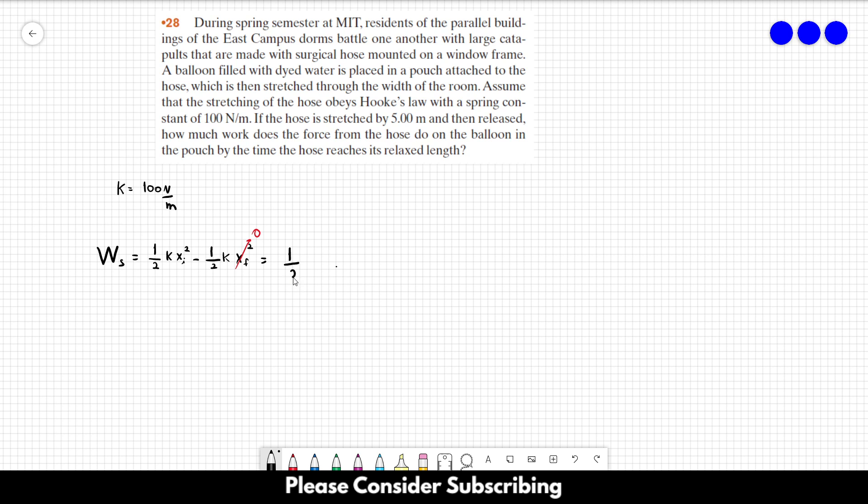This is equal to 1 over 2 times K, which is 100, times the initial position, which is 5 squared. And this gives us 1250 joules. And that's it for this problem.